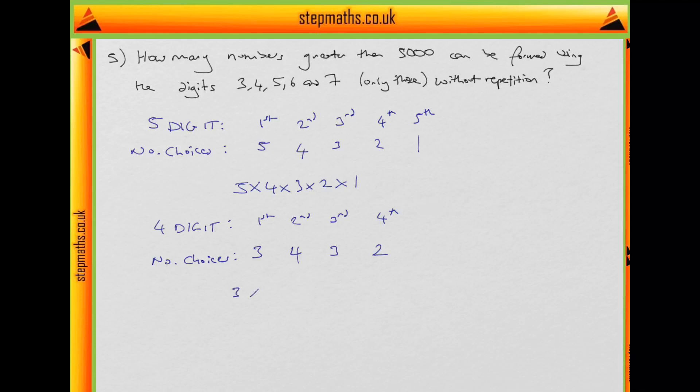So that gives us 3 times 4 times 3 times 2. And therefore, the number is 5 times 4 times 3 times 2 plus 3 times 4 times 3 times 2.